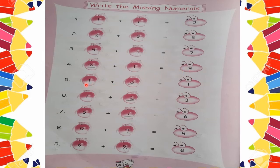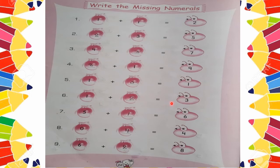Next: 1 plus space is equal to 3. We start at 1 and count 2 steps forward. So we write 2. 1 plus 2 is equal to 3.